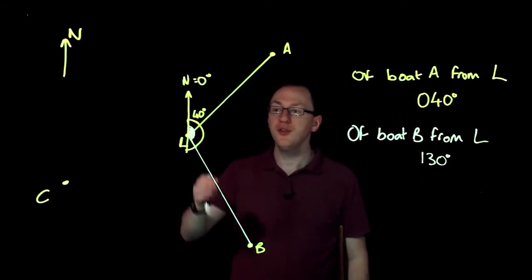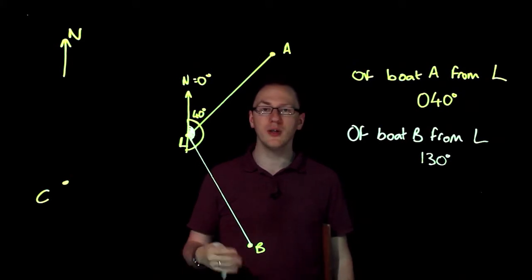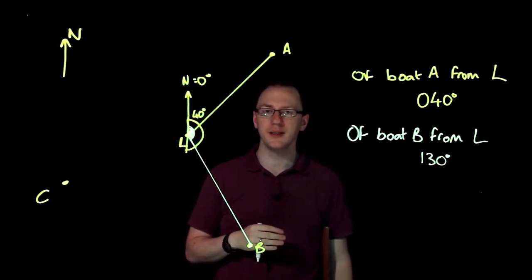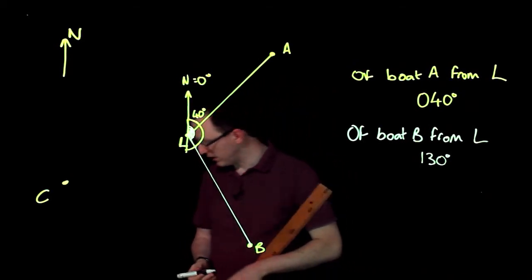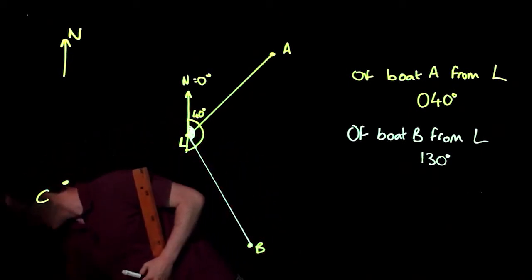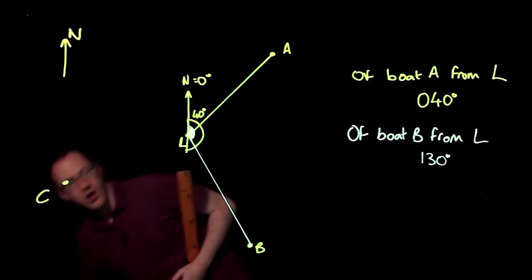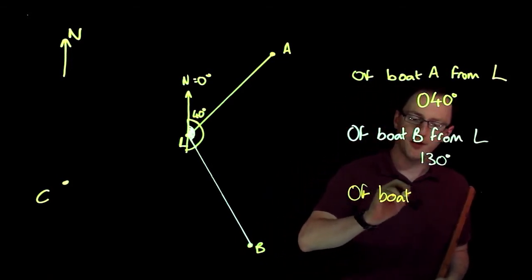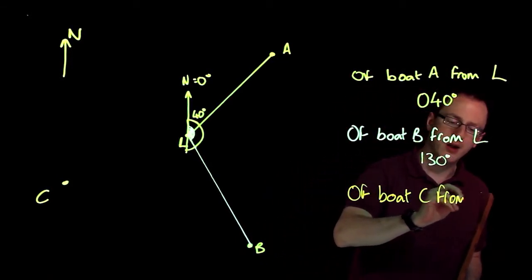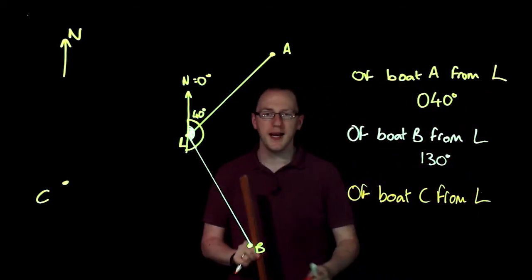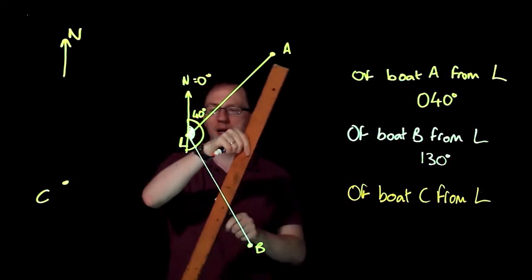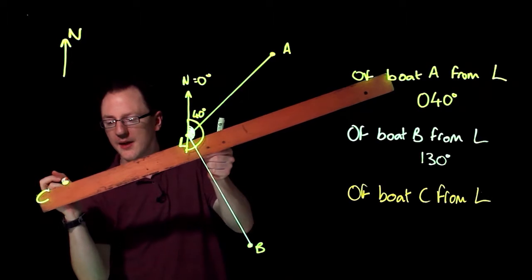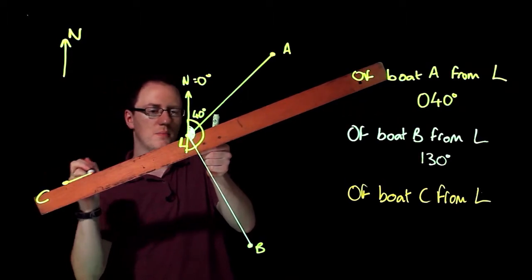Now, if you've got a protractor like I'm drawing here, a semicircle only goes up to 180 degrees. The third question might look a bit confusing. How do I measure the bearing of boat C from the lighthouse? Well, I'm going to do the same thing. I'm going to start the lighthouse. I'm going to draw a line that goes from the lighthouse to boat C.